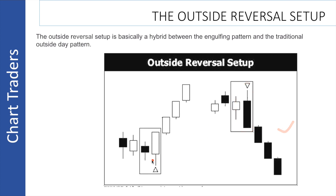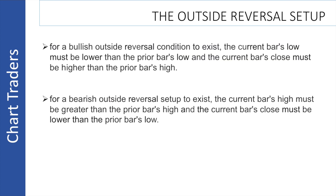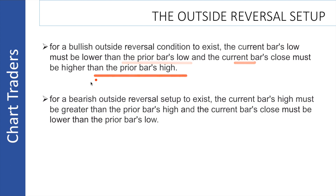For the bullish outside reversal, there are two conditions: the current bar low must be lower than the prior bar low, and the current bar close must be higher than the previous bar high.